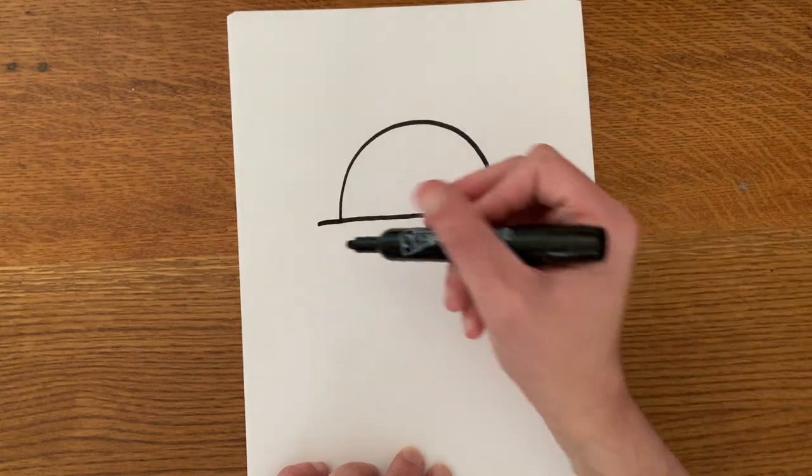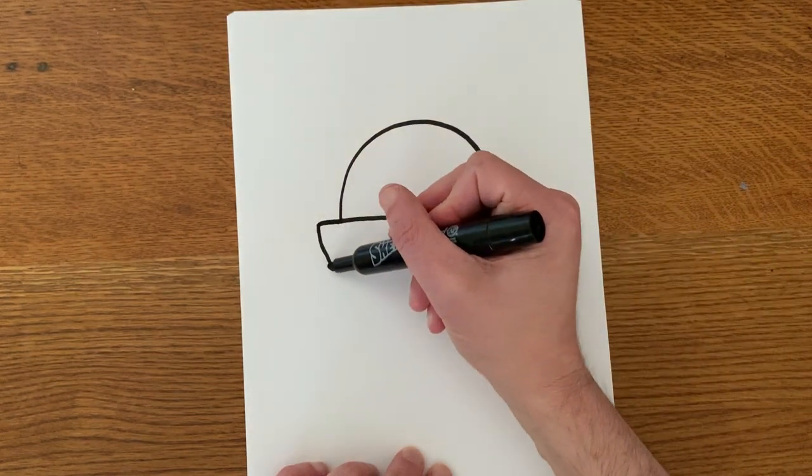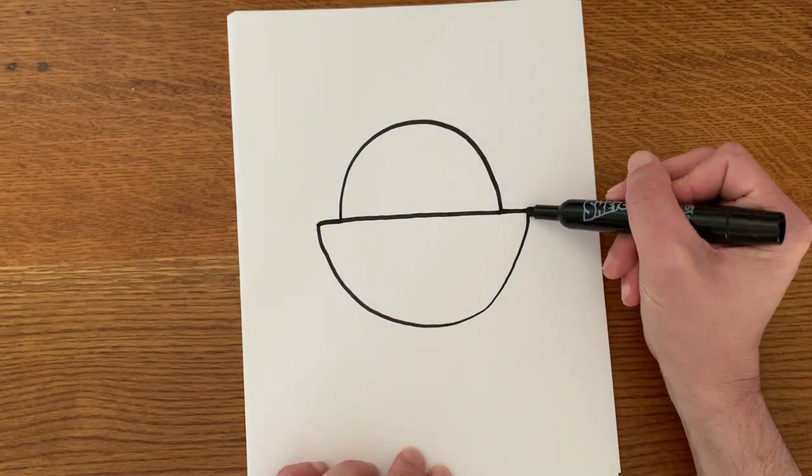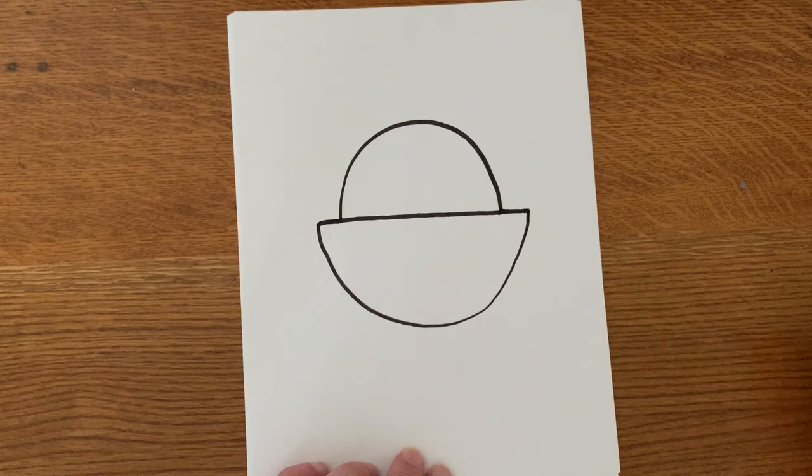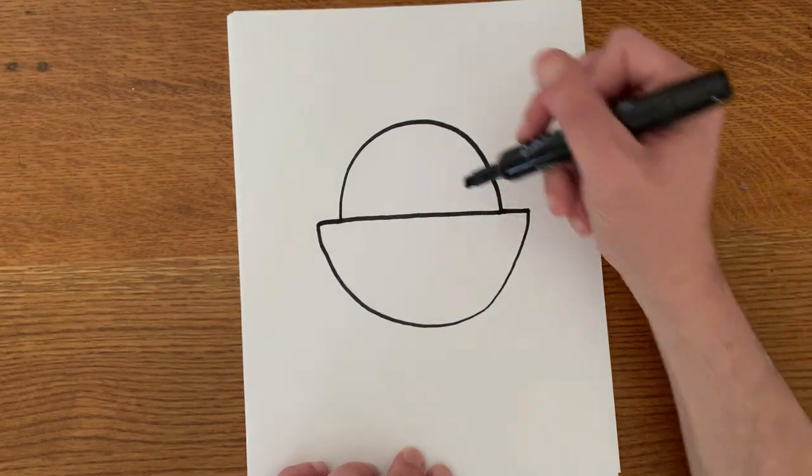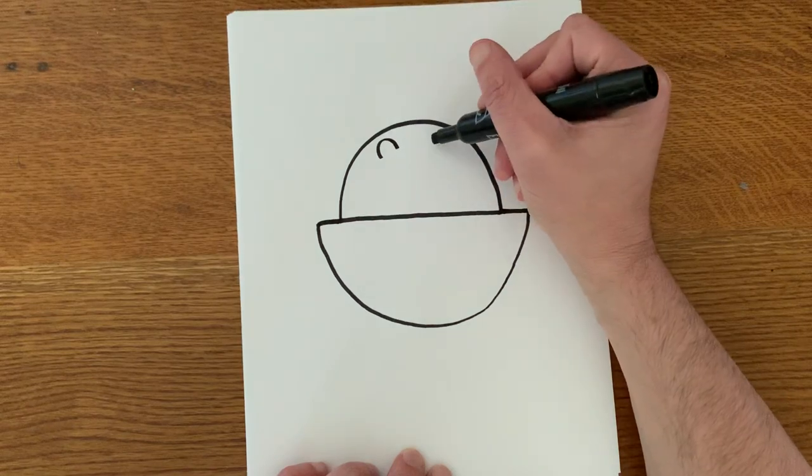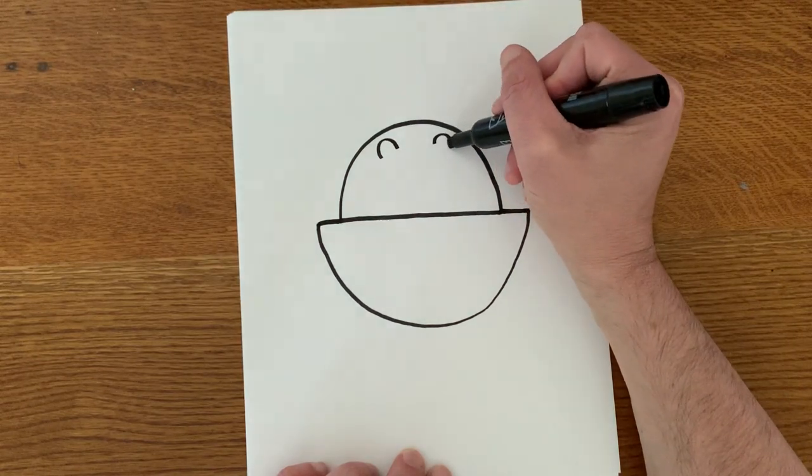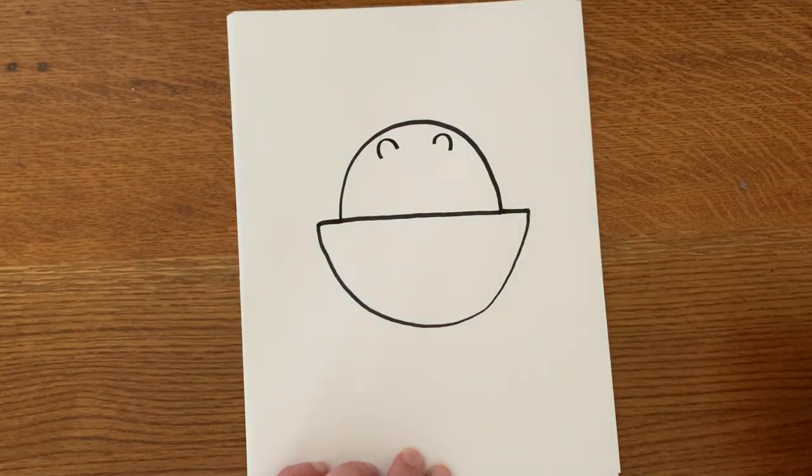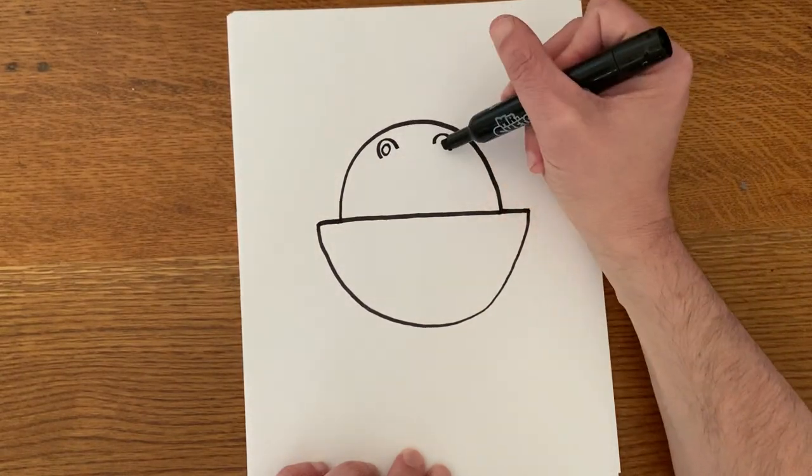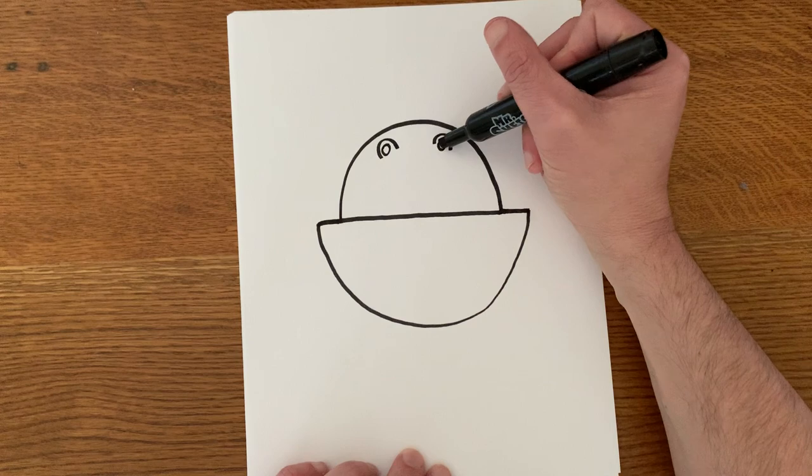And then from those two ends, I'm going to draw a U shape that connects both of those ends. Now within here, I'm going to create two upside down U's or rainbows or arcs. And then we're going to draw two circles inside. Now these are creating the nostrils for the gorilla.